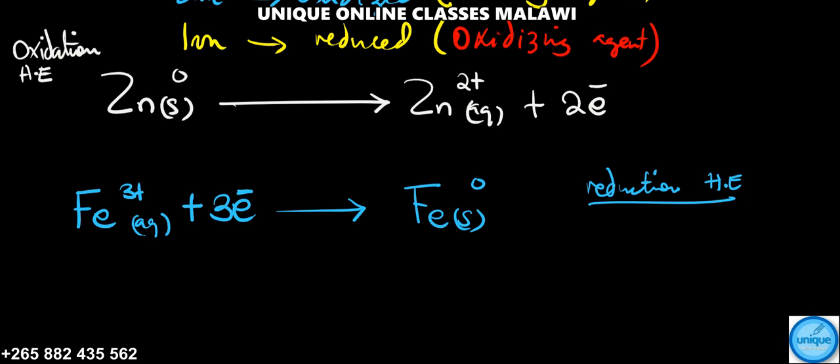We need to balance electrons lost and gained. The number of electrons gained should be equal to the number of electrons lost. We have 2, 3, and 6. Therefore, the LCM is 6. We need to multiply by 3 and by 2.